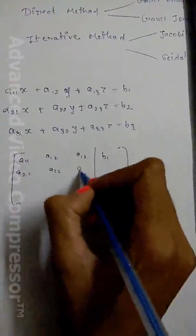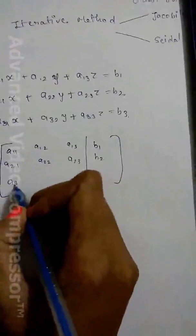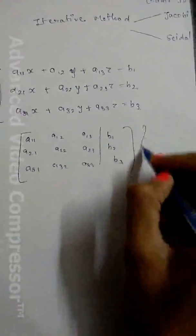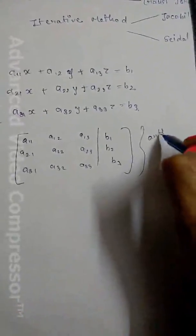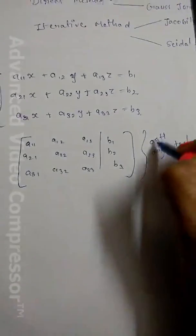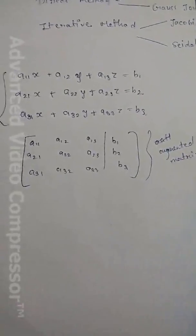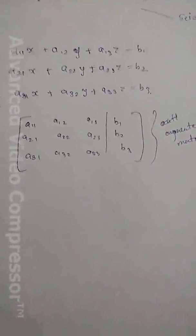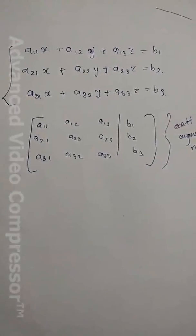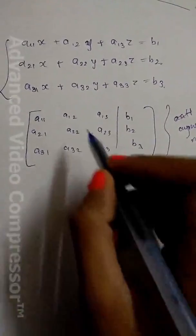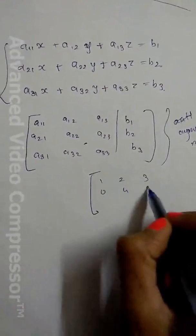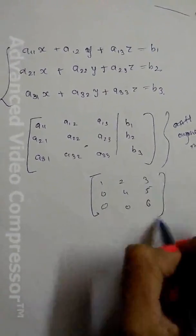The augmented matrix contains entries a21, a22, a23 and b2; a31, a32, a33 and b3. This is called an augmented matrix. We then convert this matrix into row echelon form, also called an upper triangular matrix.